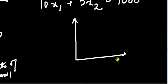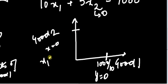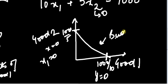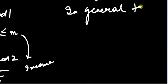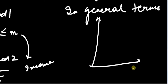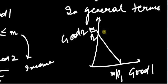Now let's plot this. On the x-axis I am going to take good 1 and on the y-axis I am going to take good 2. For the x-axis, I will put x2 equal to 0, and I get 1000 divided by 10. For the y-axis, I will put x1 equal to 0, and I get 1000 divided by 5. If I join these two points, this is called the budget line. In general terms, if I take good 1 on the horizontal axis and good 2 on the vertical axis, then the intercepts are m/p1 and m/p2, and this is my budget line.